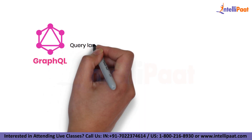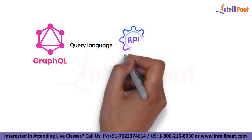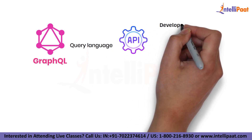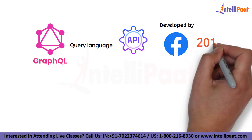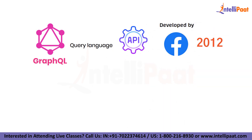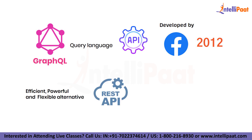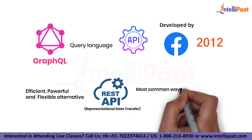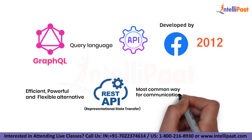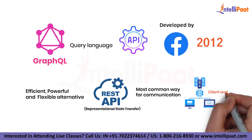GraphQL is a query language for APIs that was developed by Facebook in 2012. It provides a more efficient, powerful and flexible alternative to REST, i.e. representational state transfer, which is the most common way for communication between client and server.